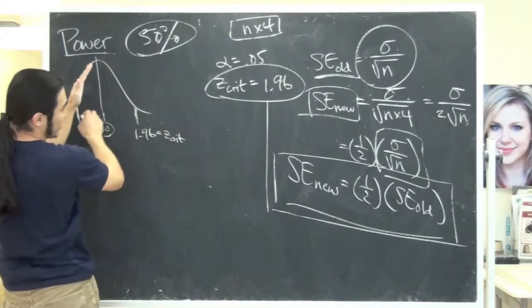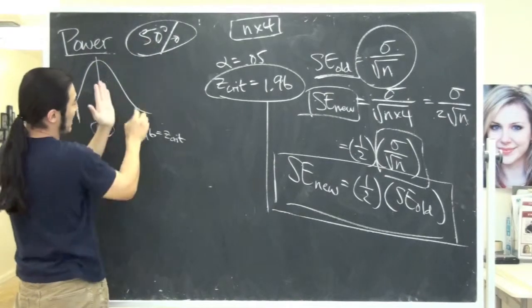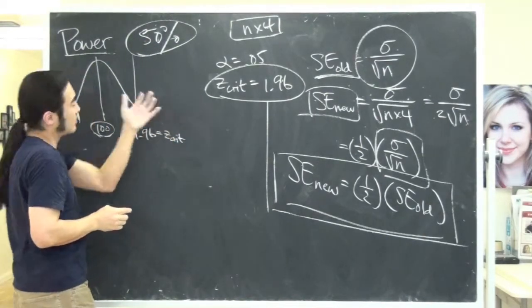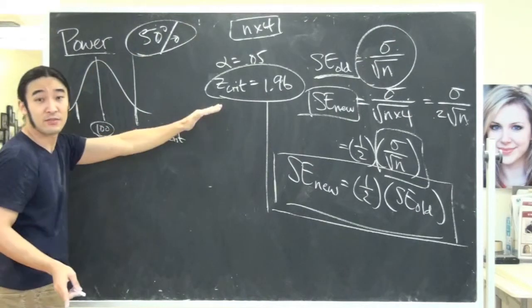And if you look at the curve that results, because the power is 50%, that means to the right of this line, right, or to the right of this line, you have 50% of the curve.